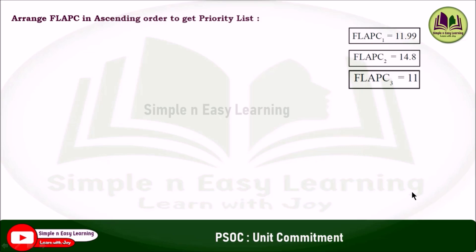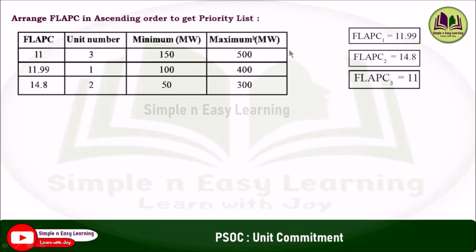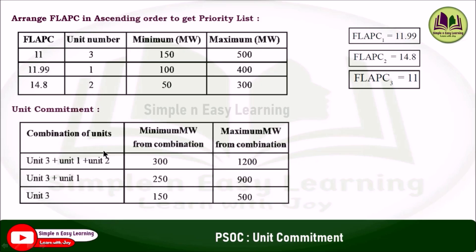Arrange the FLAPC values in ascending order to get the priority list. In the table: 11 (unit 3), 11.99 (unit 1), and 14.8 (unit 2). Write the corresponding minimum and maximum limits for each unit. The priority order is: first priority — unit 3, second priority — unit 1, third priority — unit 2.